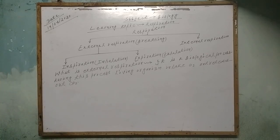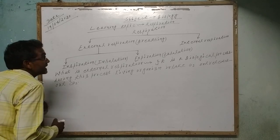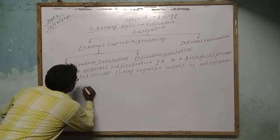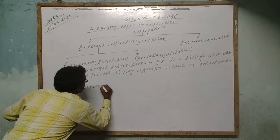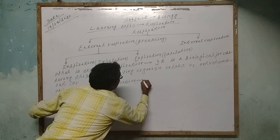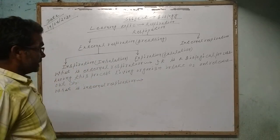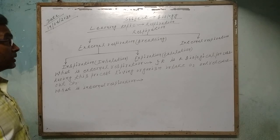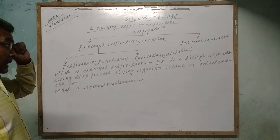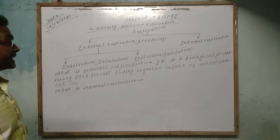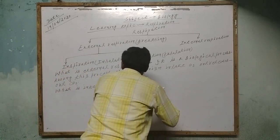What is internal respiration? The second point is internal respiration. Internal respiration is defined as a biological process during which biological oxidation of glucose molecules takes place and releases CO2, water, and 38 ATP molecules.